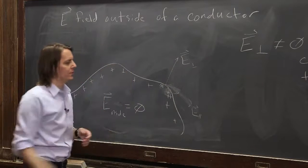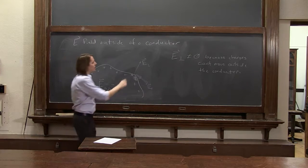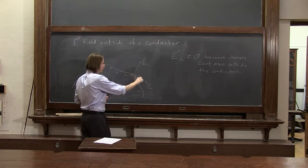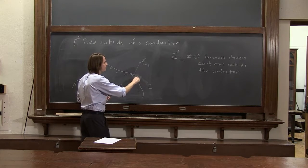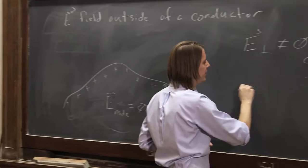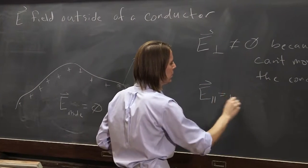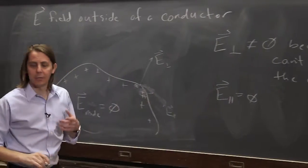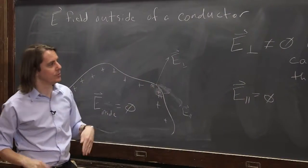Three charges. And then that's enough to kill it. So for a field that's parallel going along the surface, E parallel, it does equal zero. Because in that direction, along the surface, the charge can move.